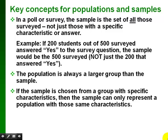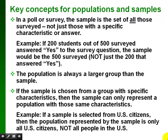If the sample is chosen from a group with very specific characteristics, then the sample can only represent a population with those same characteristics. For example, if we select only from males in the population, or only test scores from statistics students, then our sample can only represent that same group. If we selected a sample from only the males of the population, then our sample is only going to represent males in the population.